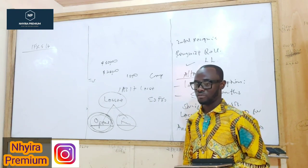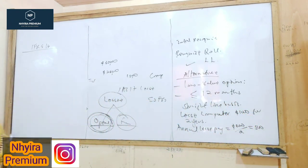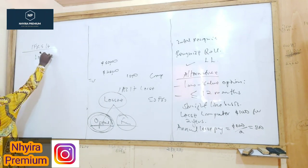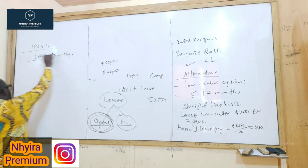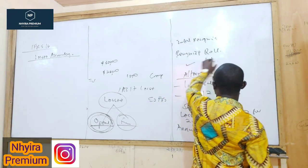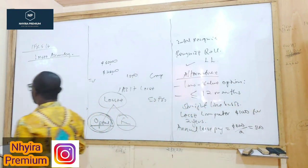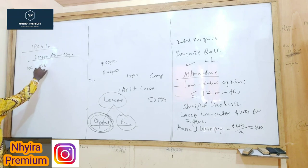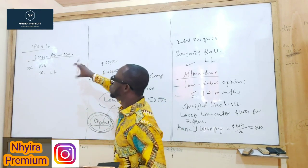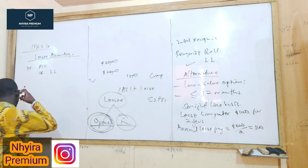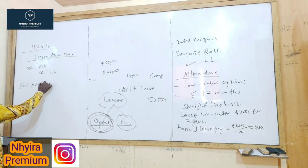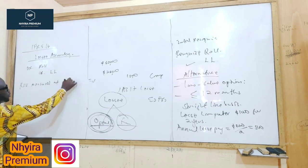Now let's go to the real issue — lessee accounting in detail. On initial recognition, the lessee recognizes the right of use of an asset and a lease liability. For double entry purposes, we debit the right of use asset and credit the lease liability. The key question is: what should constitute the value of the right of use asset?